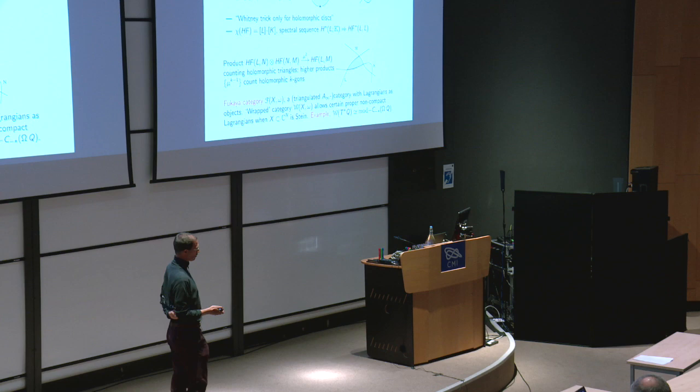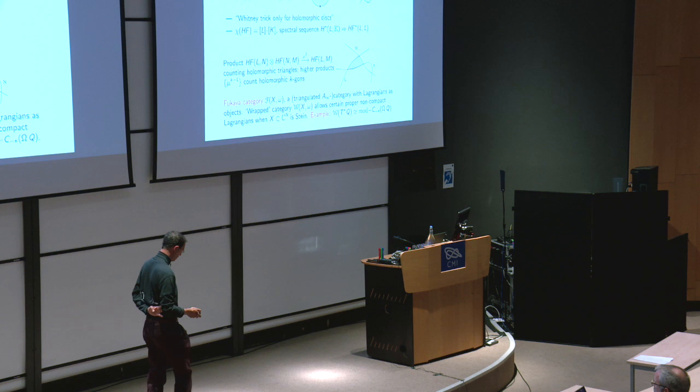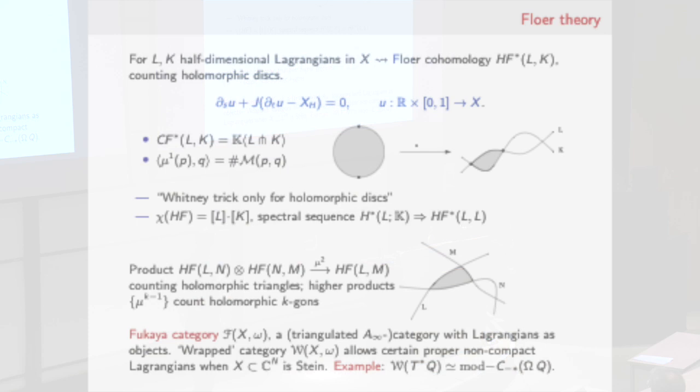Once you're counting maps from a strip, which is like a disk with two boundary marked points, well you might choose to count maps from a disk with three or four or five boundary marked points. It turns out that there's a category whose objects are Lagrangian submanifolds satisfying suitable conditions. These Floer groups, the homologies of these chain groups, form the morphisms in this category. Counts of triangles define the composition map, inputting two intersection points and giving you coefficients of a third. All together you end up with a rather sophisticated algebra structure called the Fukaya category - a triangulated A-infinity category. It has a wrapped cousin in which you allow certain non-compact Lagrangians when your ambient manifold is non-compact, for instance an affine variety.